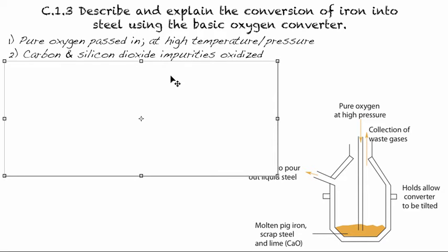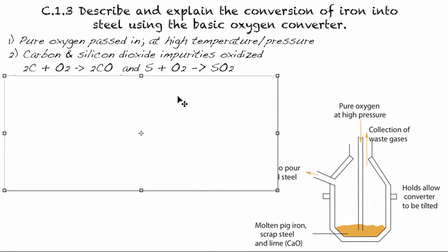And then the carbon and silicon dioxide impurities are oxidized. So we do know that there's always some impurities inside our raw materials. So right away, blasting that inside there will produce carbon monoxide and sulfur dioxide, and so those can be removed.